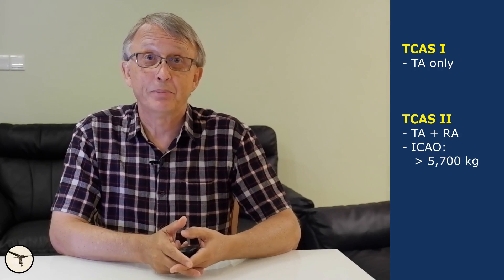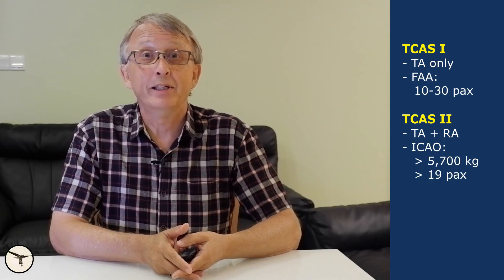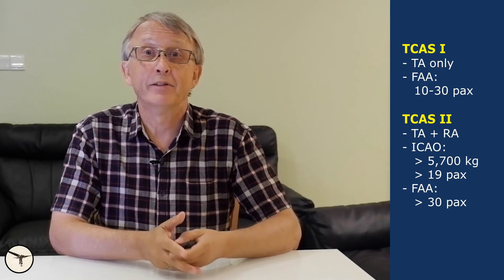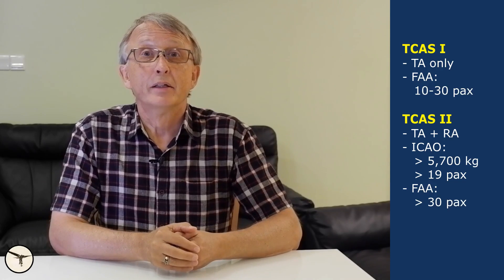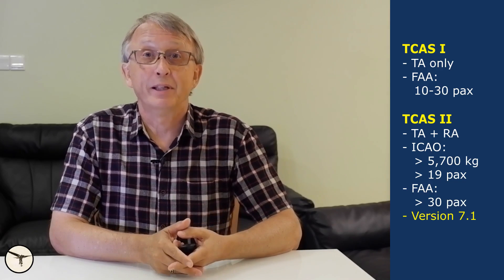There are two variants of TCAS: TCAS 1 and TCAS 2. TCAS 1 issues only traffic advisories. TCAS 2 issues traffic advisories and resolution advisories. TCAS 2 is mandated by ICAO to be fitted in all aircraft with a maximum takeoff mass of more than 5,700 kilos or 12,600 pounds, or having more than 19 passenger seats. In the United States, TCAS 1 is required in aircraft with 10 to 30 passenger seats and TCAS 2 in aircraft with more than 30 passenger seats.